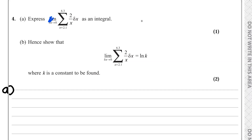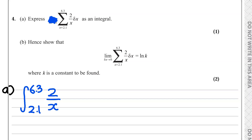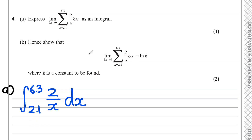In order to express this sigma as an integral, firstly the limit at the front can be ignored — you don't need it to write it as an integral. The sigma sign is essentially the integral sign; 6.3 is the upper limit and 2.1 is the lower limit. The function is 2 over x, and delta x — this delta sign — is essentially the dx. This is how you express this sigma as an integral.